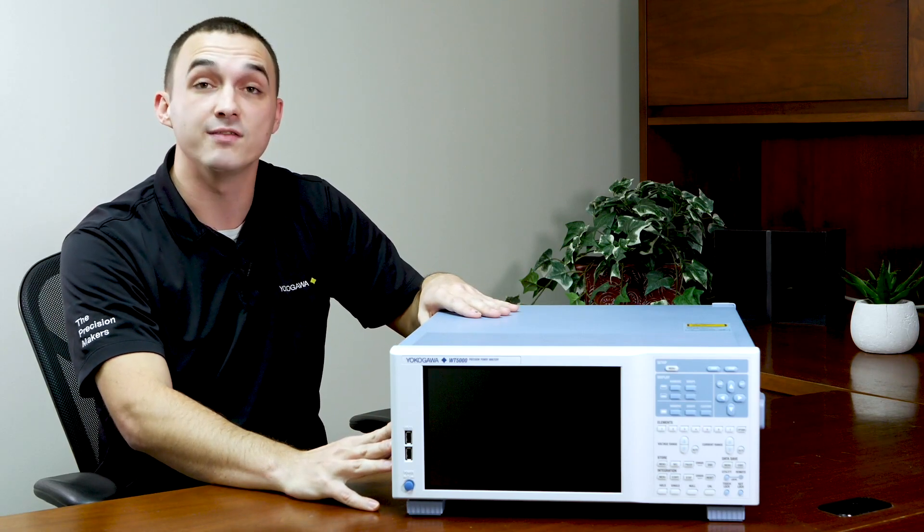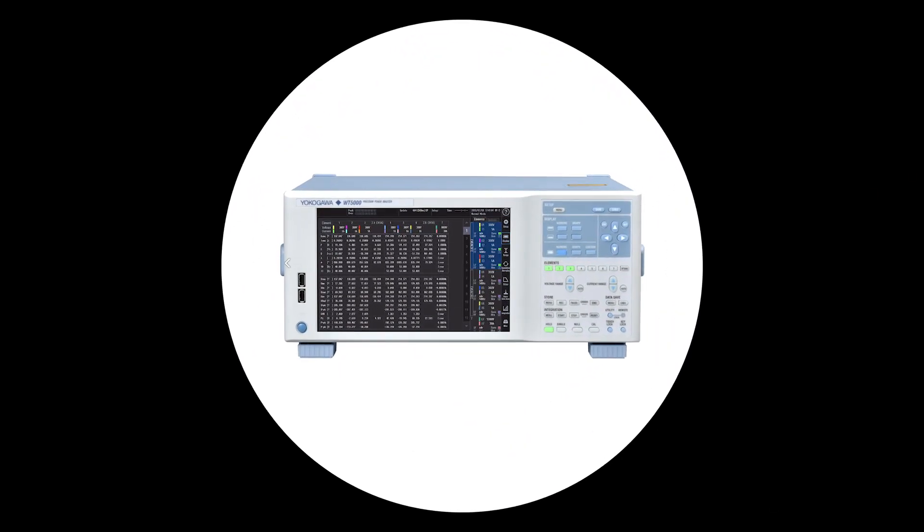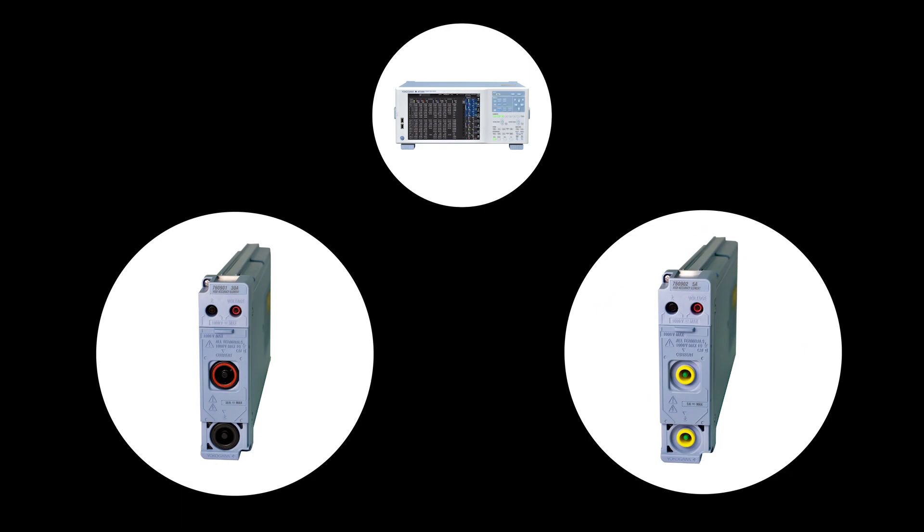They have the new six millimeter safety leads. The WT5000 is available with two different input modules: the 760901 30 amp high accuracy element and the 760902 5 amp high accuracy element. Both elements include the connectors for making the voltage and current connections necessary for power measurement.